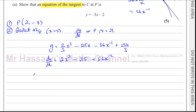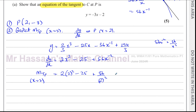We want to find the gradient when x equals 2. The gradient of the tangent at P is: 2 times 2 squared minus 25 plus 56 over 2 squared. That's 2 times 4, which is 8, minus 25 plus 56 over 4. 56 over 4 is 14. So 8 minus 25 plus 14: 8 plus 14 is 22, and 22 minus 25 is negative 3. That's exactly what we were looking for — the gradient is negative 3.